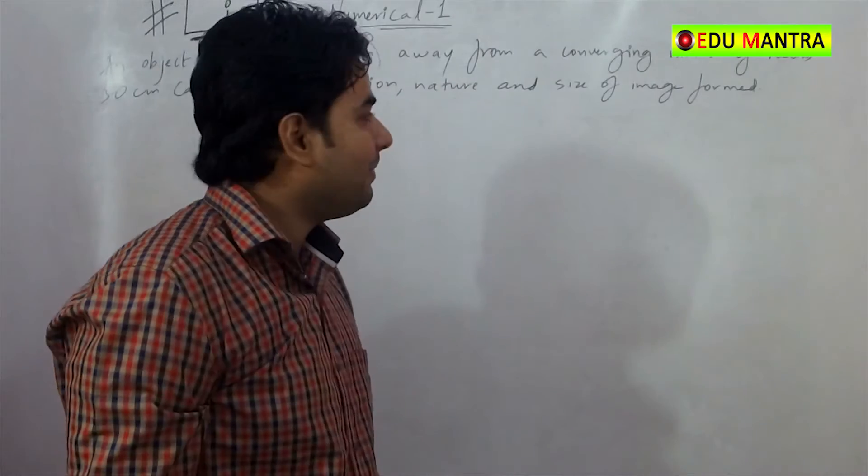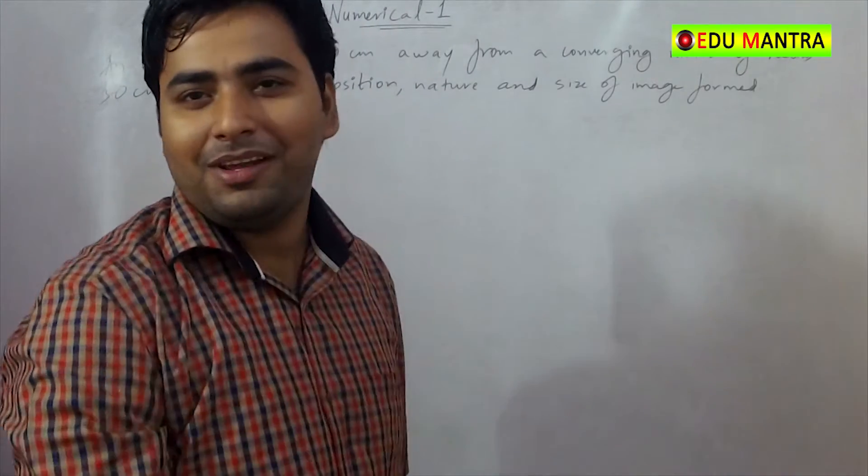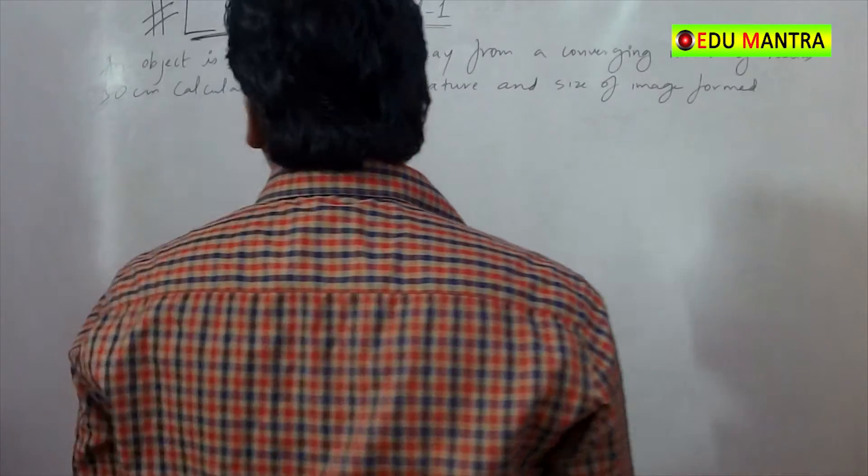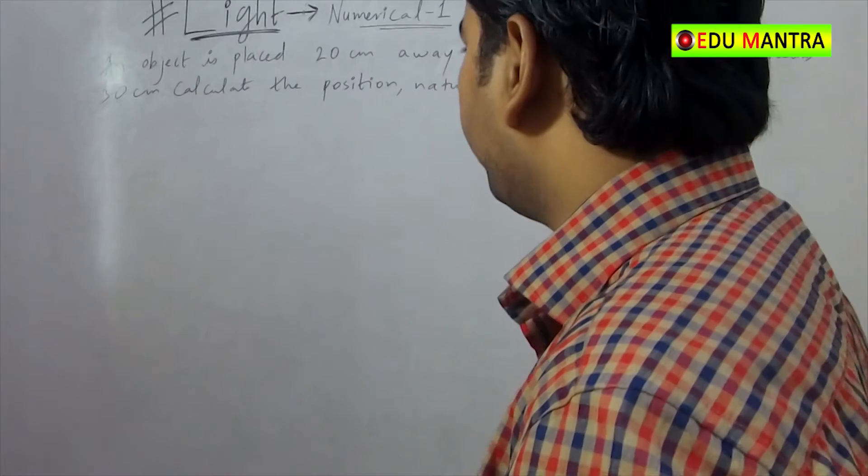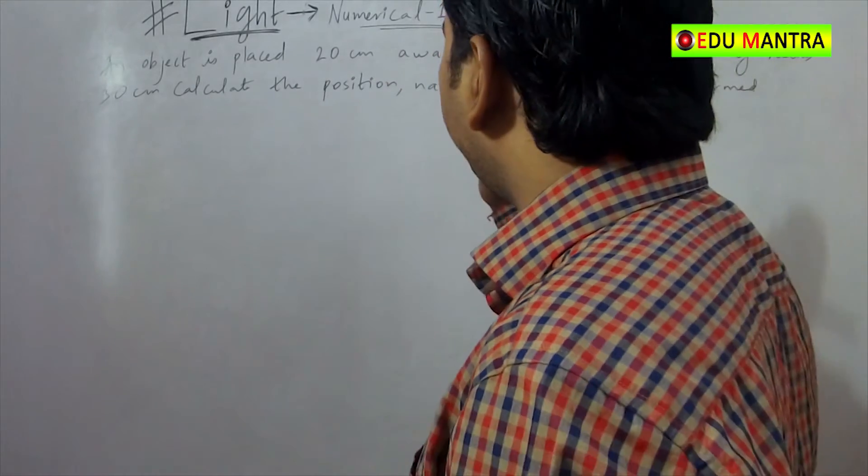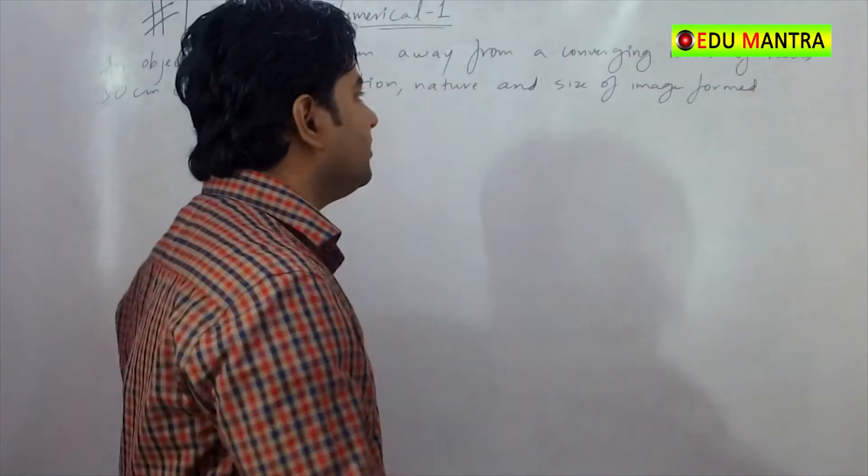So, first of all, it is numerical and here we have sign convention and formula. Let's see. An object is placed 20 cm away from a converging mirror. What is this converging mirror?